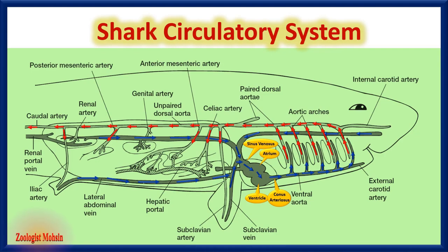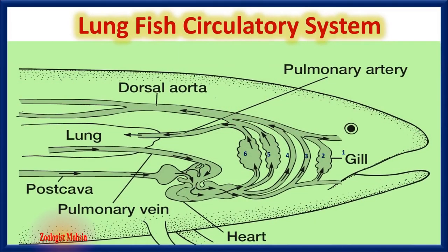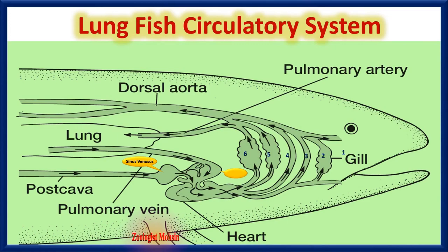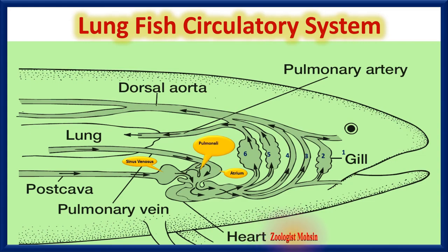Now let's move to lung fishes. Lung fish circulation is a little more complicated than typical fishes. The sinus venosus is the same as other fishes and collects deoxygenated blood from the whole body. However, the next structure — the atrium — is modified in lung fishes and is different from other fishes.